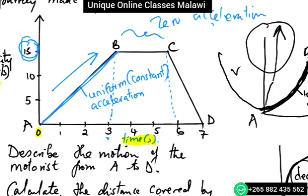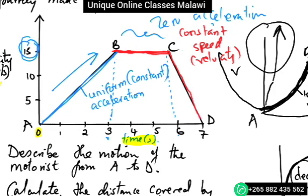In a distance-time graph, a horizontal line means stationary, but here we have zero acceleration but constant speed or constant velocity. Whereas in section CD, we have uniform deceleration as the speed decreases to zero.